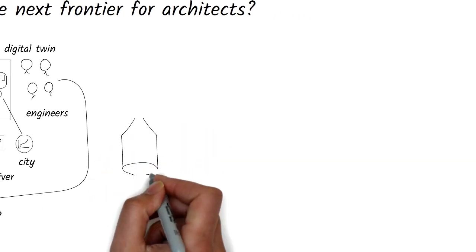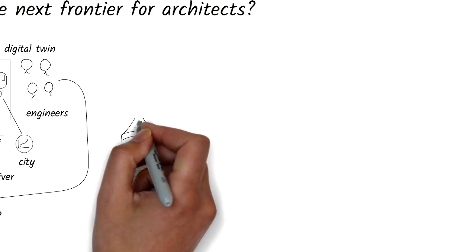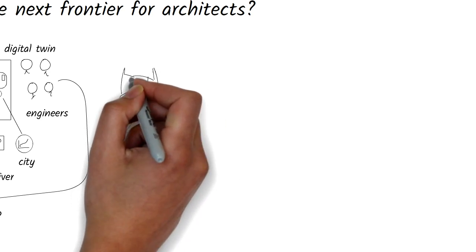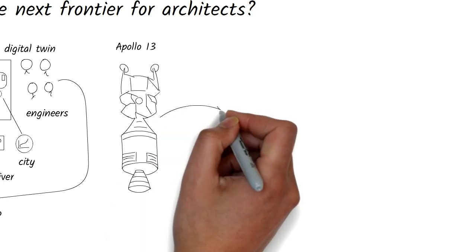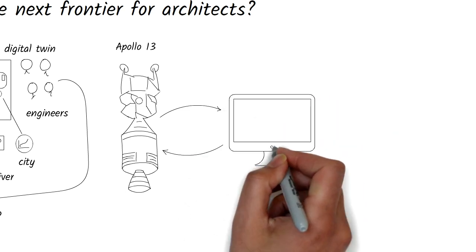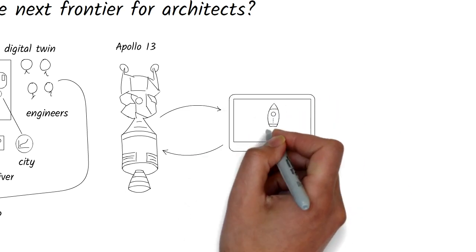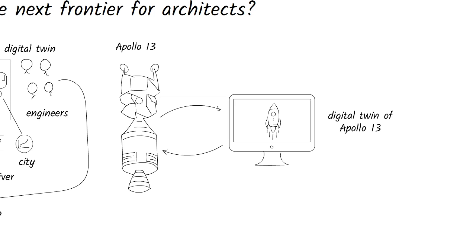The concept of a digital twin was first developed in the late 1960s by NASA to digitally replicate the Apollo 13 rocket. The idea was that if you could create a digital representation of the physical object, then you could use that representation to understand and control that physical object.